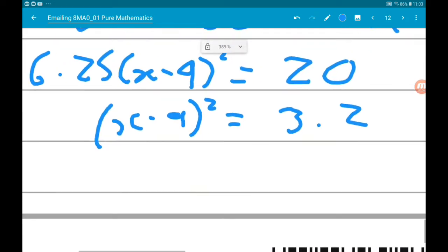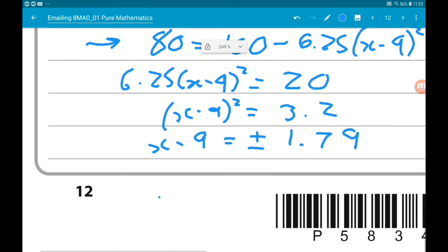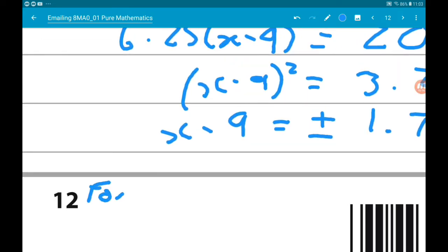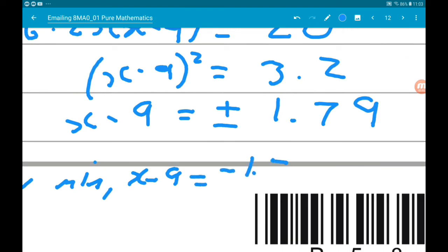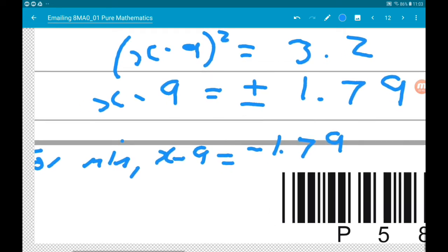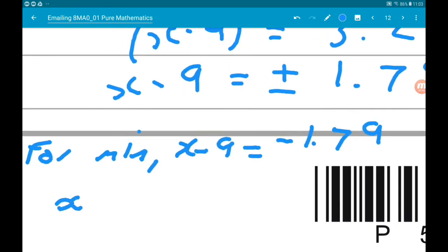Now if we square root, we get x minus 9 is equal to plus or minus 1.79. Now we want the minimum selling price of x. So for the minimum, x minus 9 is equal to minus 1.79. So if we add 9, x would equal 9 minus 1.79, which is 7.21 pounds.